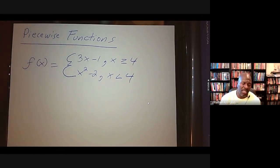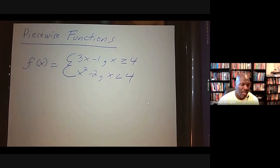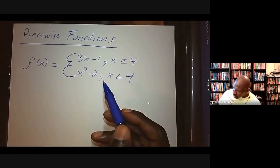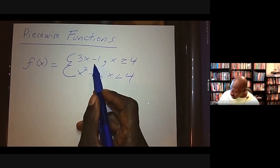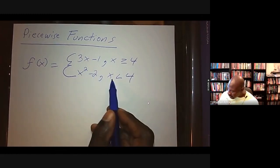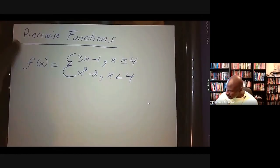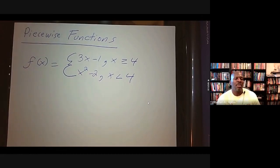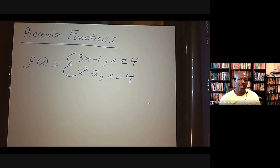Let me write a piecewise function: f(x) = 3x - 1 when x ≥ 4, and f(x) = x² - 2 when x < 4. Notice the two pieces each have conditions. The function takes the value of the first piece for all x ≥ 4, and the value of the second piece when x < 4. Piecewise functions are necessary because real-life scenarios can be modeled one way up to a certain point, then require a different function.